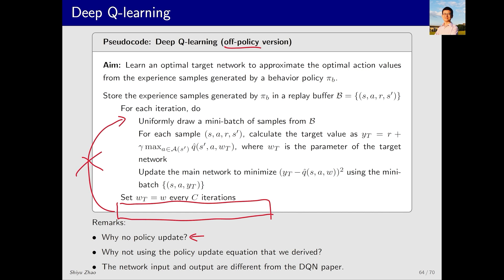Second, we provided a policy update equation earlier. It involved a target function with two parameters w. We fixed one w and computed the gradient for the other. Why aren't we using that equation here? The reason is straightforward: in theory, that equation serves as a guide for generating the current algorithm. In practice, we need to follow the principles of batch training in neural networks, treating them as black boxes to efficiently train them.